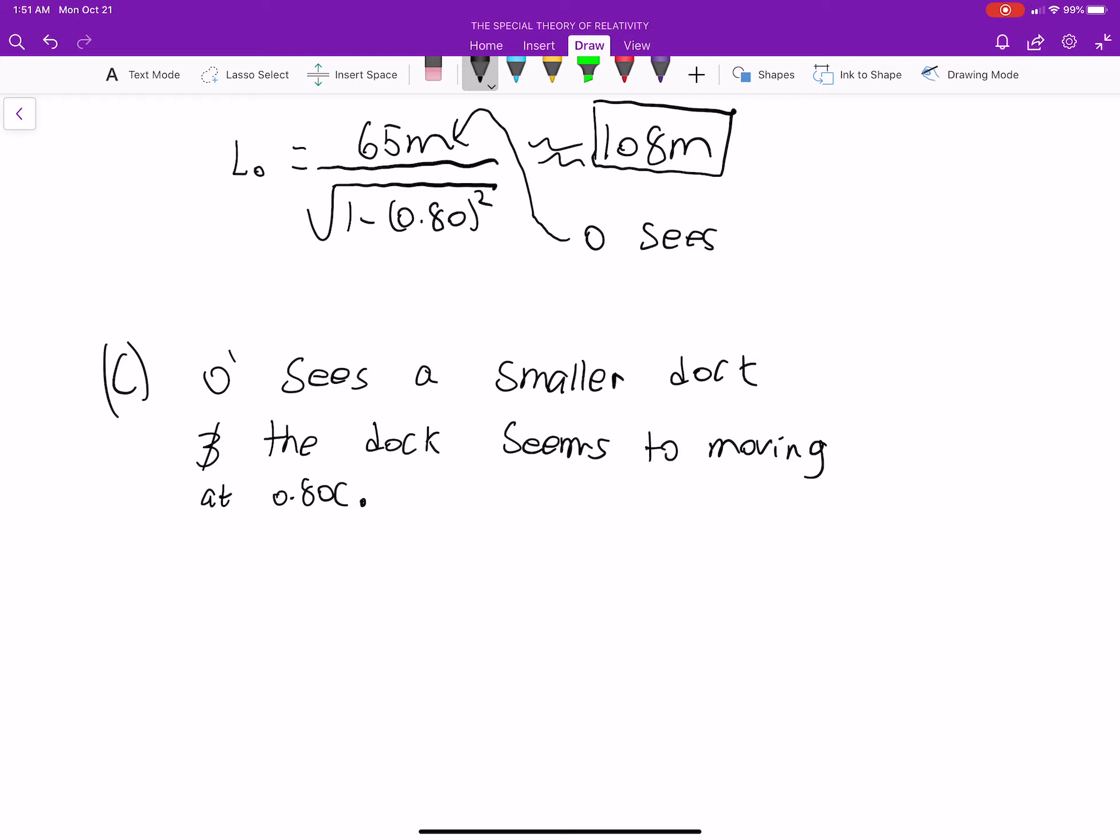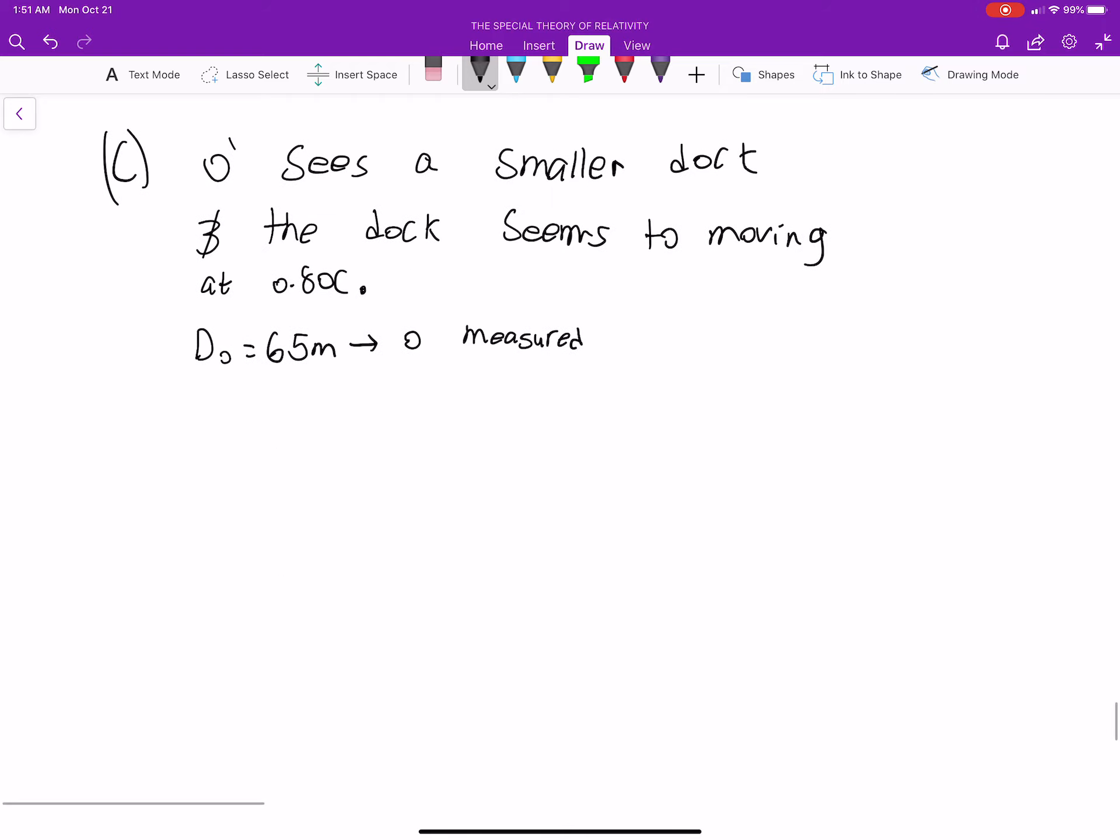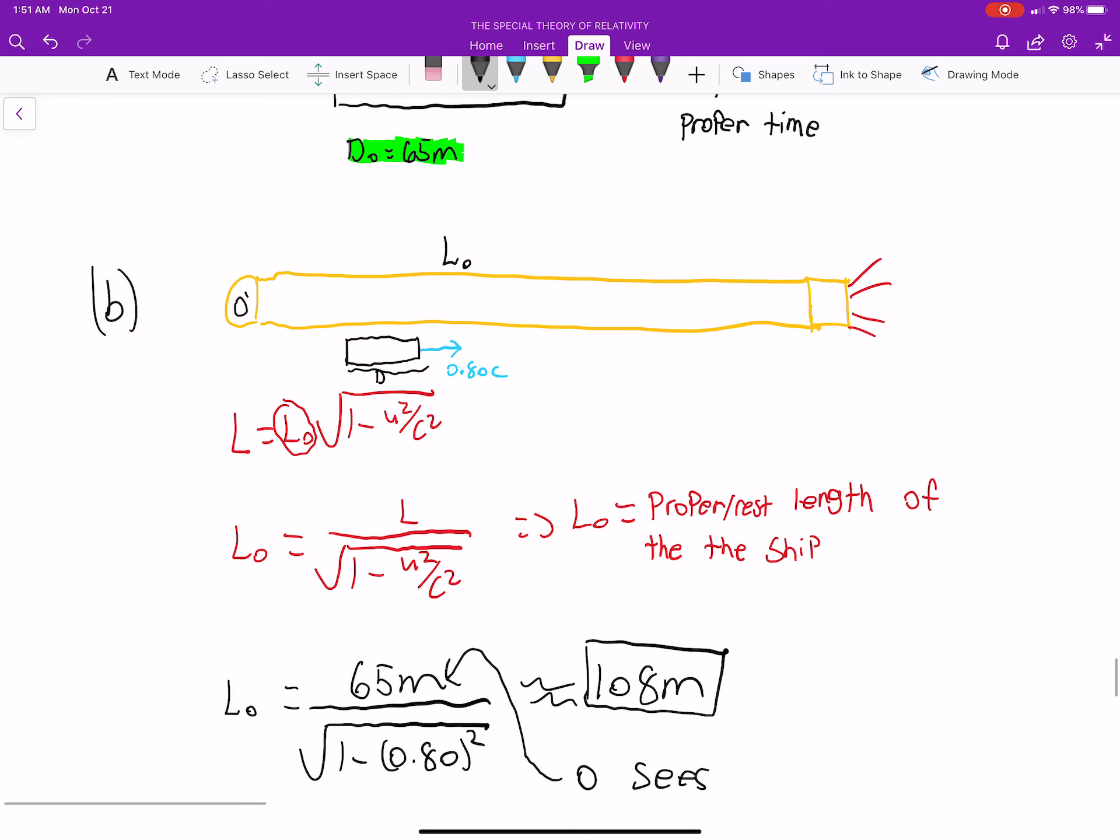Okay. So this is from O-prime's point of view, and it's going to see the platform shrunk. Now, the proper length, D naught, is the 65 meters. That's its rest length. That's what O measured. So, we can again use our equation that we found - times the square root of 1 minus 0.80 squared, meter squared per second squared, because we're squaring our units too. If you plug that in, you'll get about 39 meters. So this ship would see this dock as being only 39 meters, compared to the 65 that is at rest.